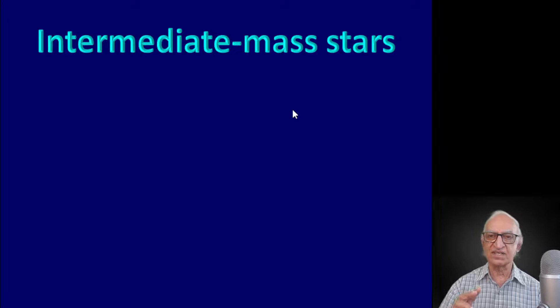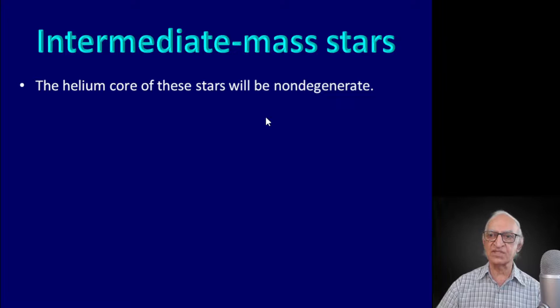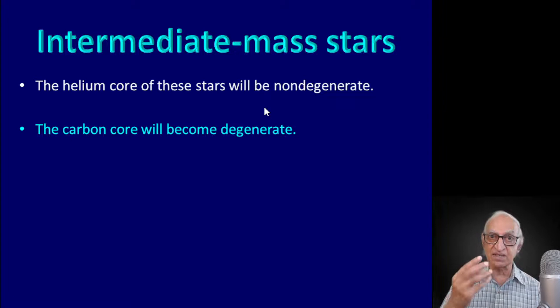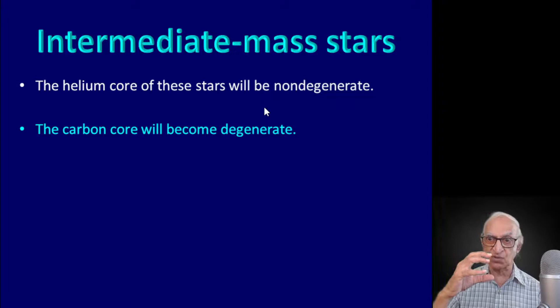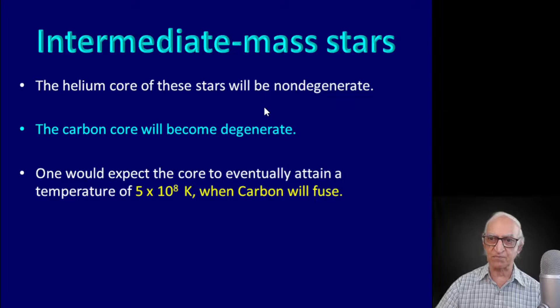So this is what we now believe will be the story of the evolution of intermediate mass stars. The helium core of these intermediate mass stars will be non-degenerate — you can calculate kT and show it is much larger than the Fermi energy EF. The result of helium burning will be a carbon core with a little admixture of oxygen, and this core will now be degenerate.